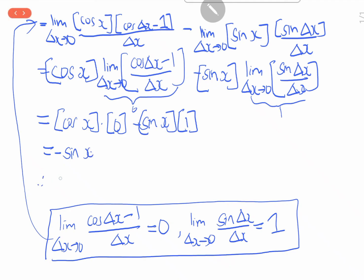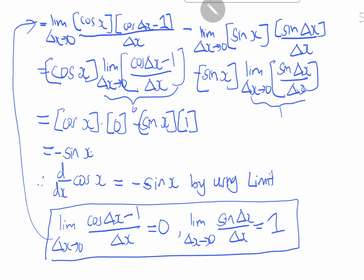Therefore, we have proven that d over dx of cosine x equals minus sine x, by using the limit definition of derivatives. So now we have come to the end of this video. If you have any comments, please feel free to drop me a comment and I will reply. Thanks so much for watching and have a nice day.